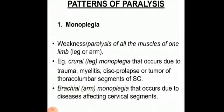Now the last part of today's class: patterns of paralysis. We will discuss different types — monoplegia, hemiplegia, paraplegia, quadriplegia, and isolated paralysis. Paralysis, or the suffix 'plegia', means complete loss of voluntary movements. The term 'paresis' refers to weakness of the muscle, also called incomplete paralysis. Depending upon the distribution of parts of the body involved, paralysis is categorized accordingly.